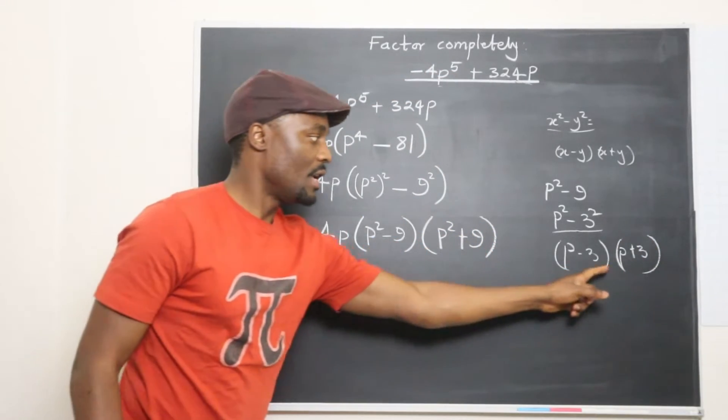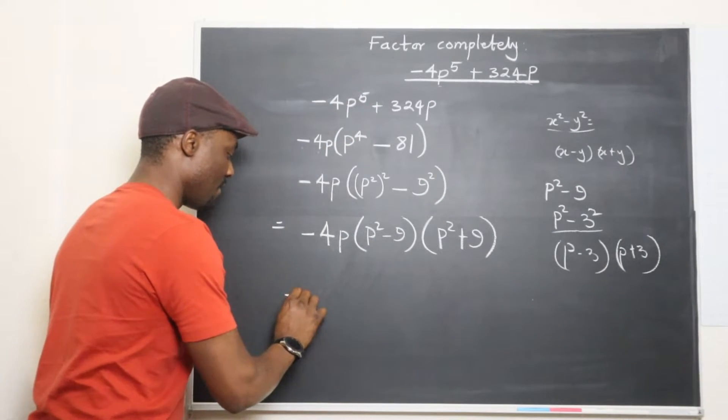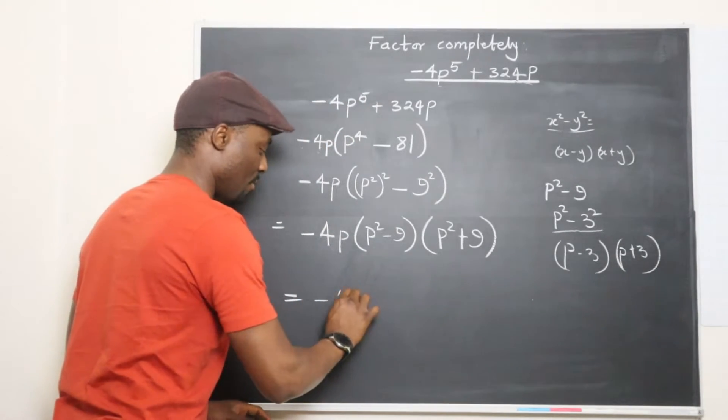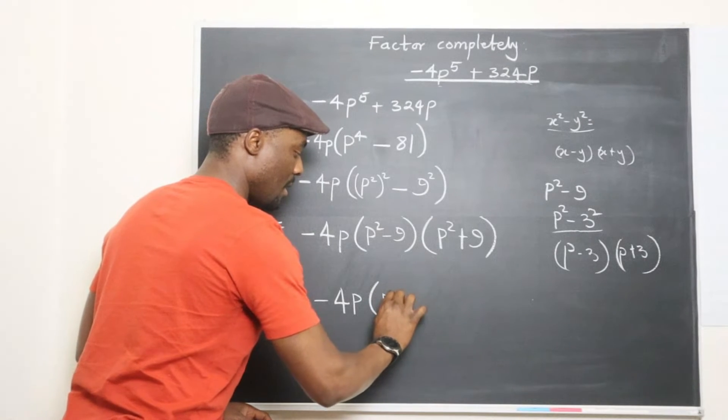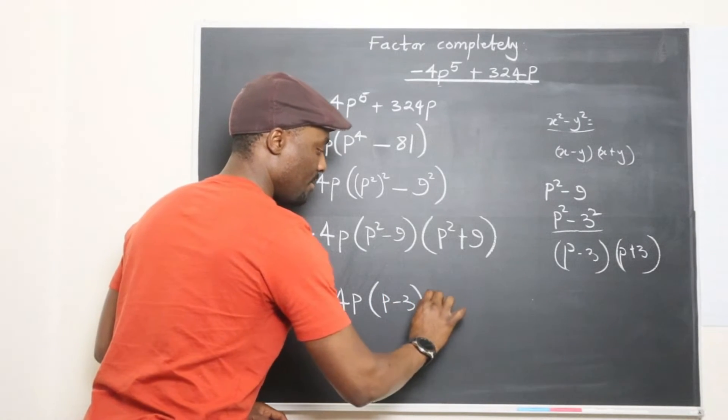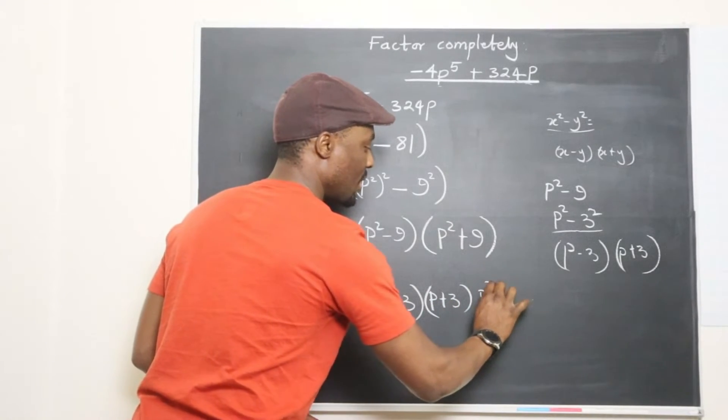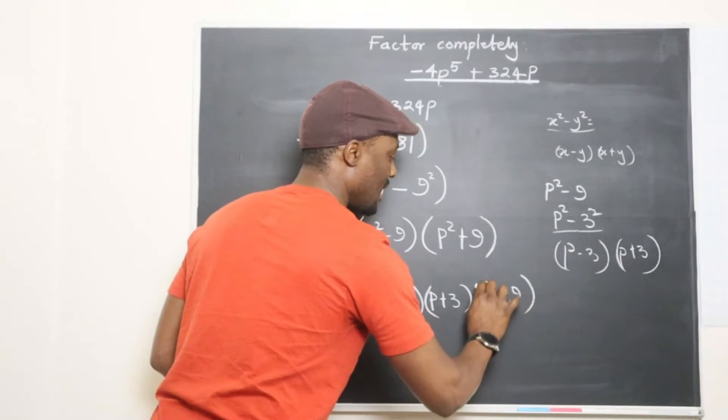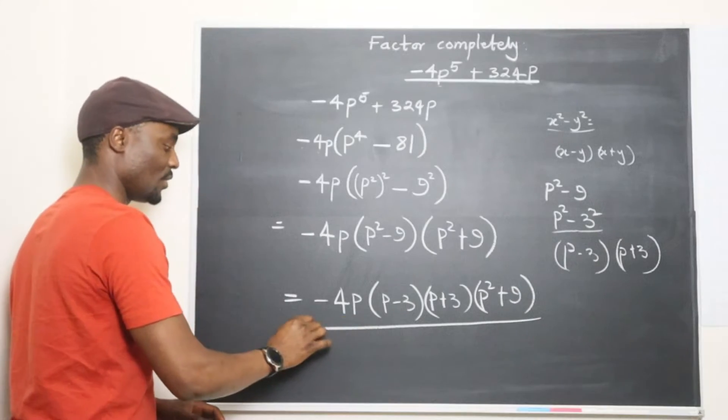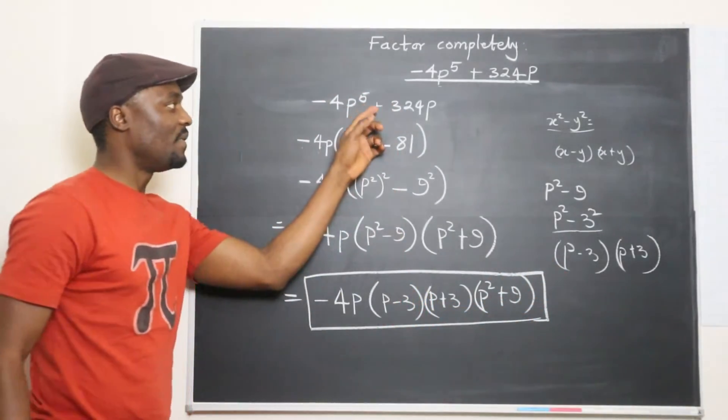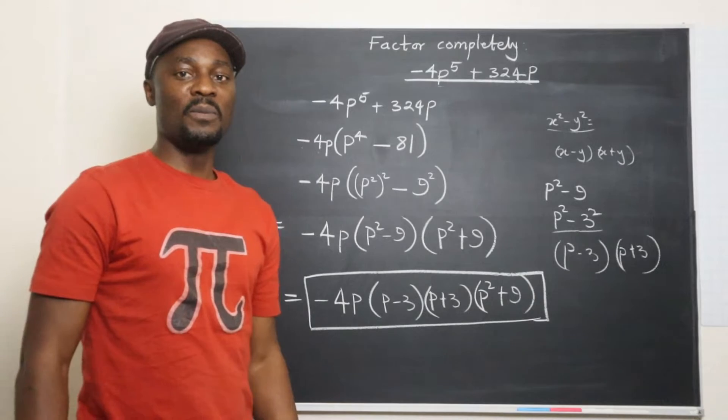We're going to break this down into these two, and then your final expression will be negative 4P into P minus 3, P plus 3, and you have P squared plus 9. So this is what you get as your final factor of this simple binomial.